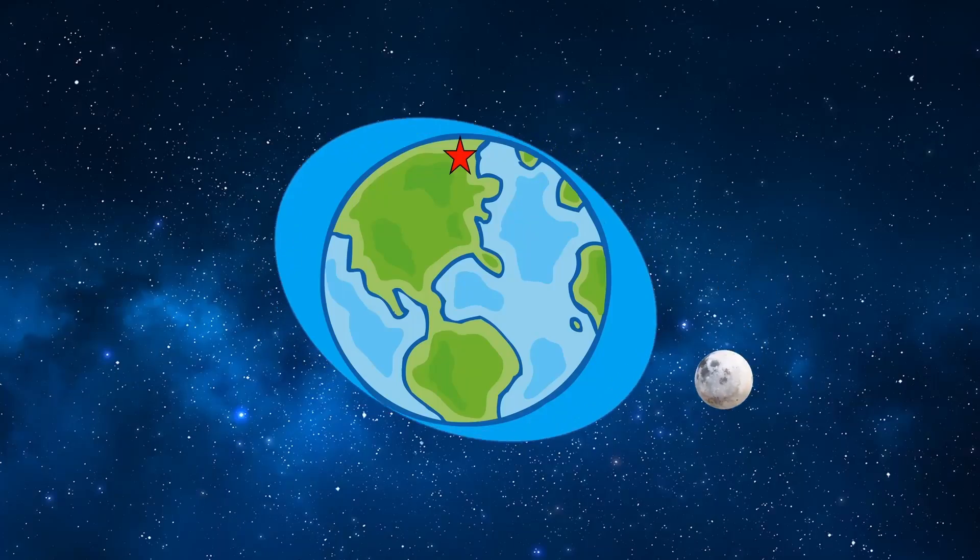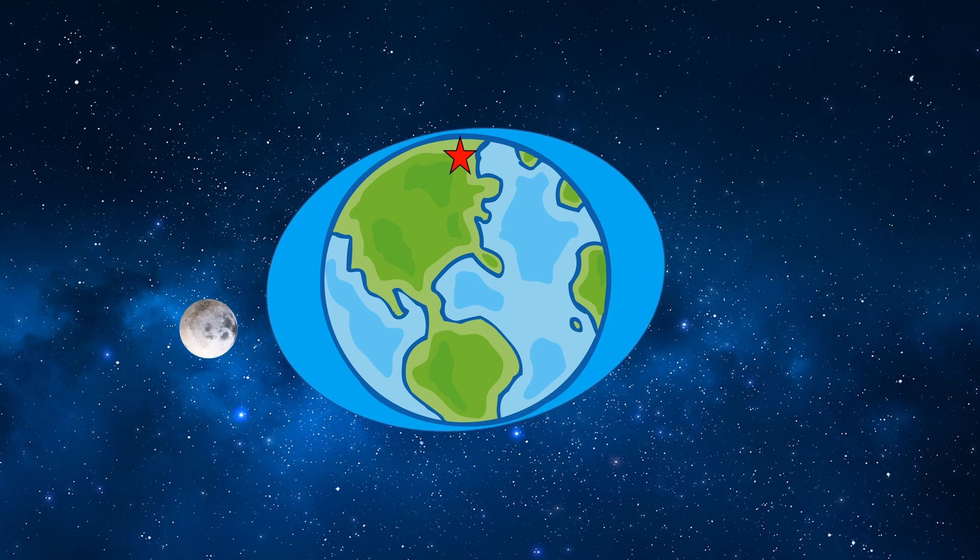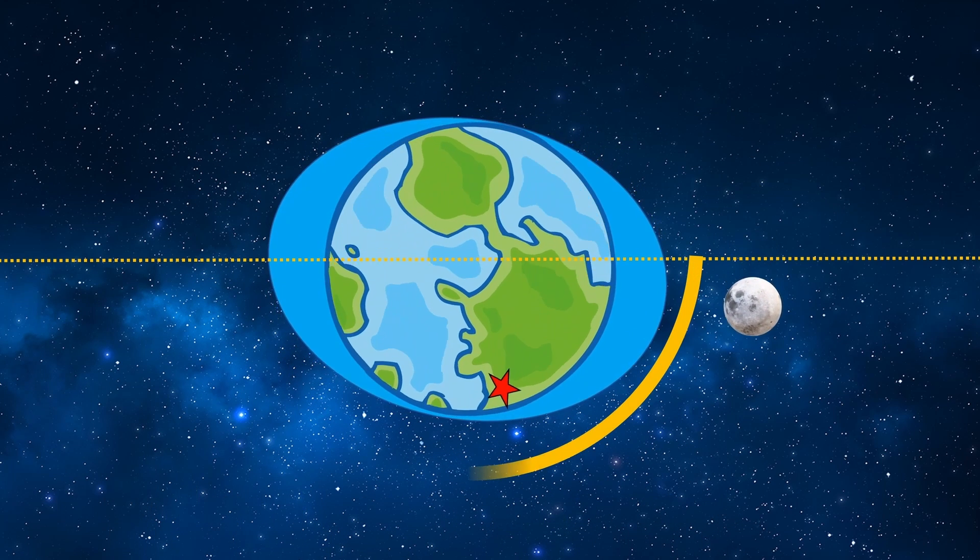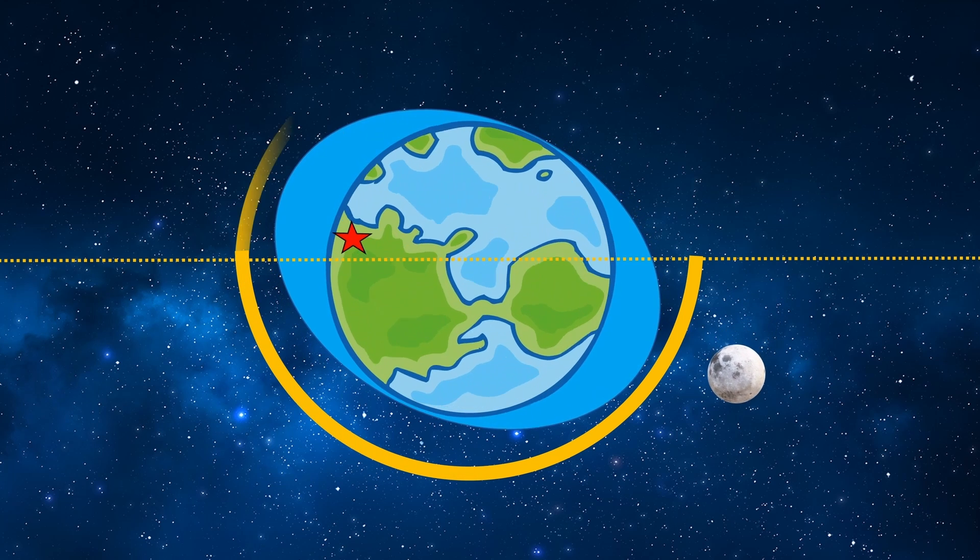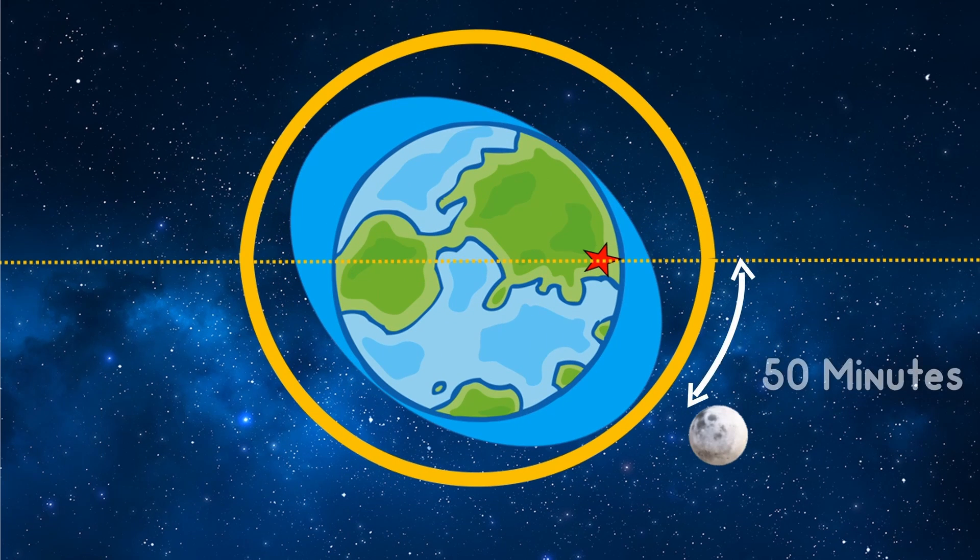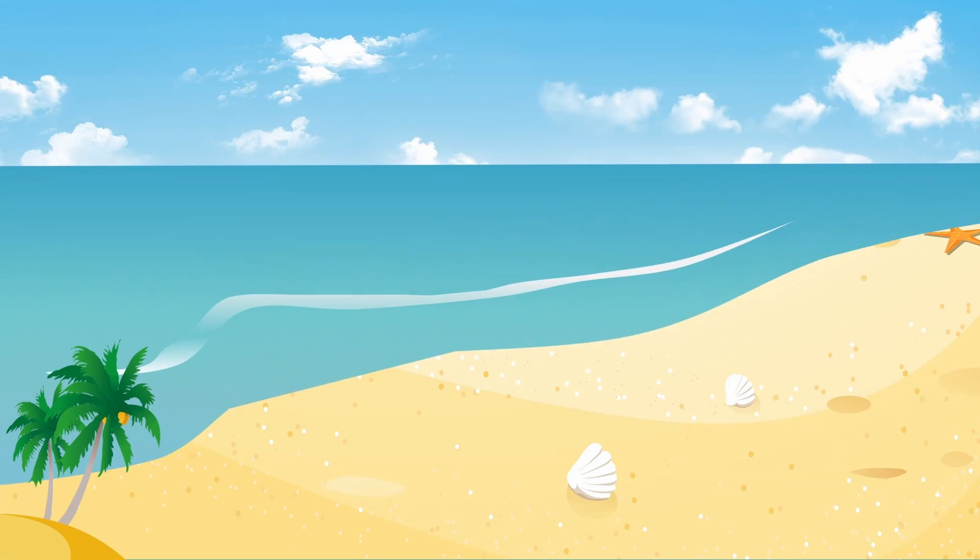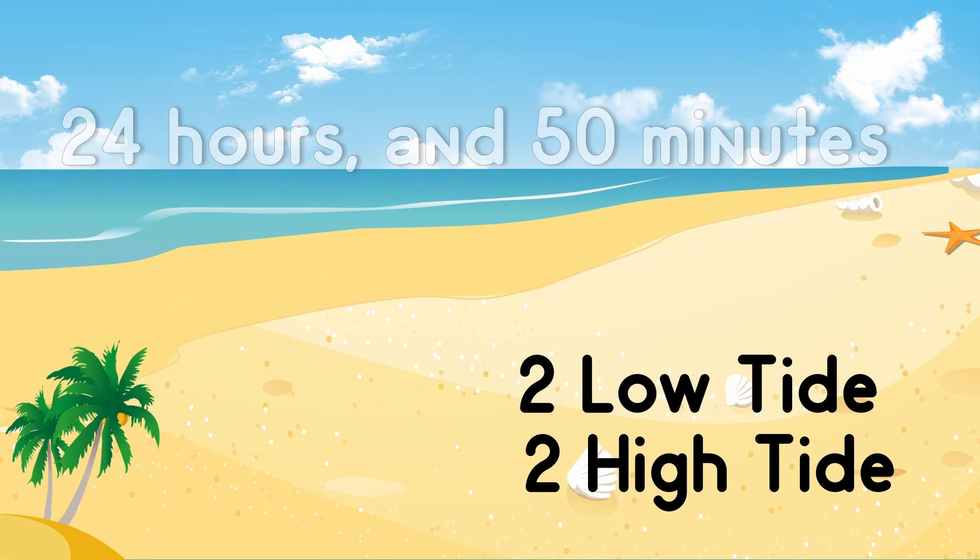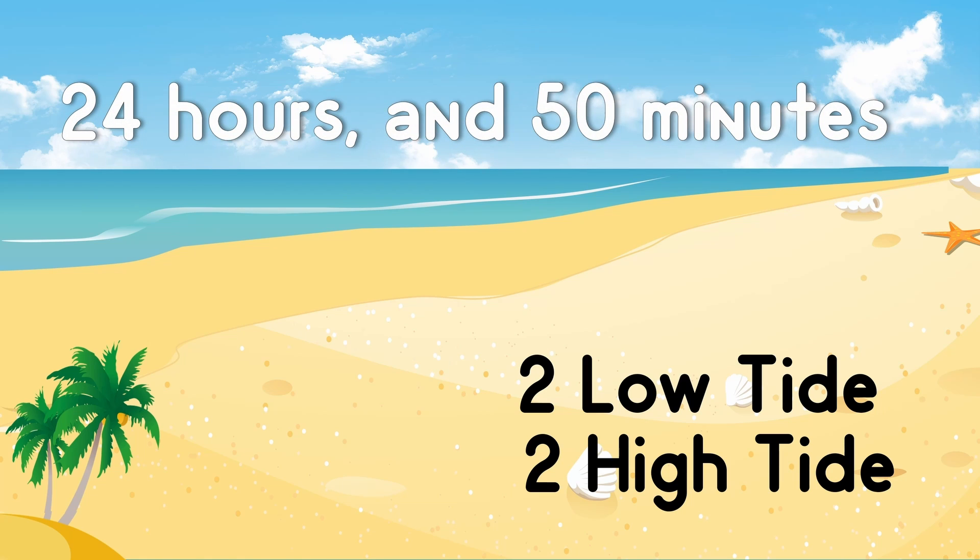But there is one more thing we need to consider before concluding this. The moon is not stationary. It revolves around the earth in 27 days, 7 hours, and 43 minutes. Our earth must travel a little further in its path to catch up to the moon. It needs 50 minutes to do this. Therefore, we experience two high tides and two low tides every 24 hours and 15 minutes.